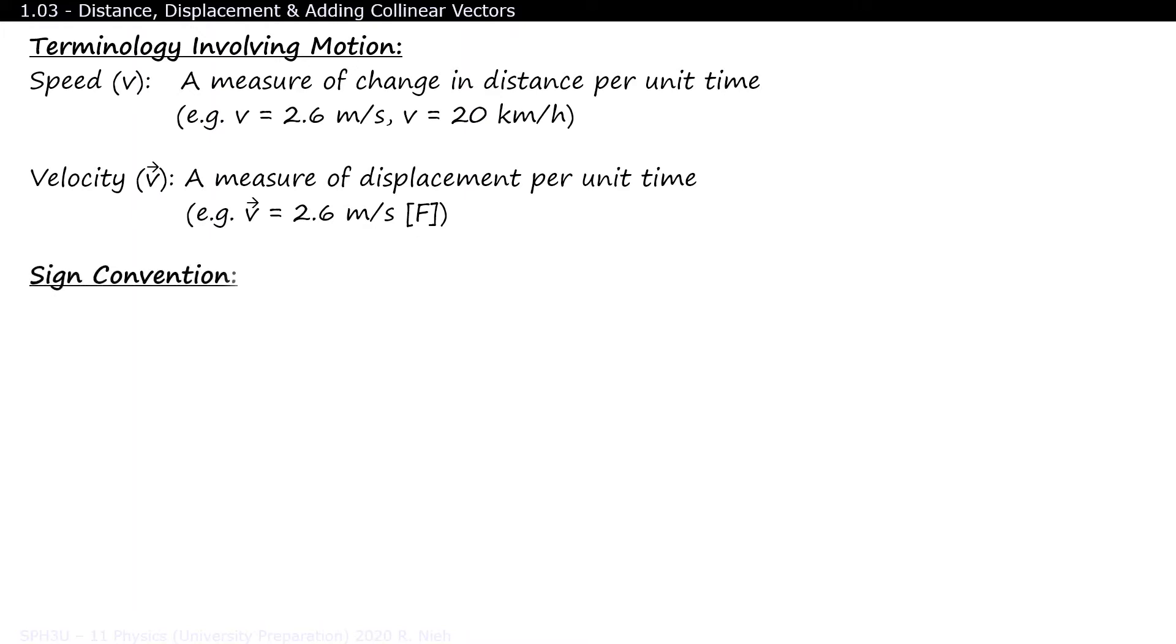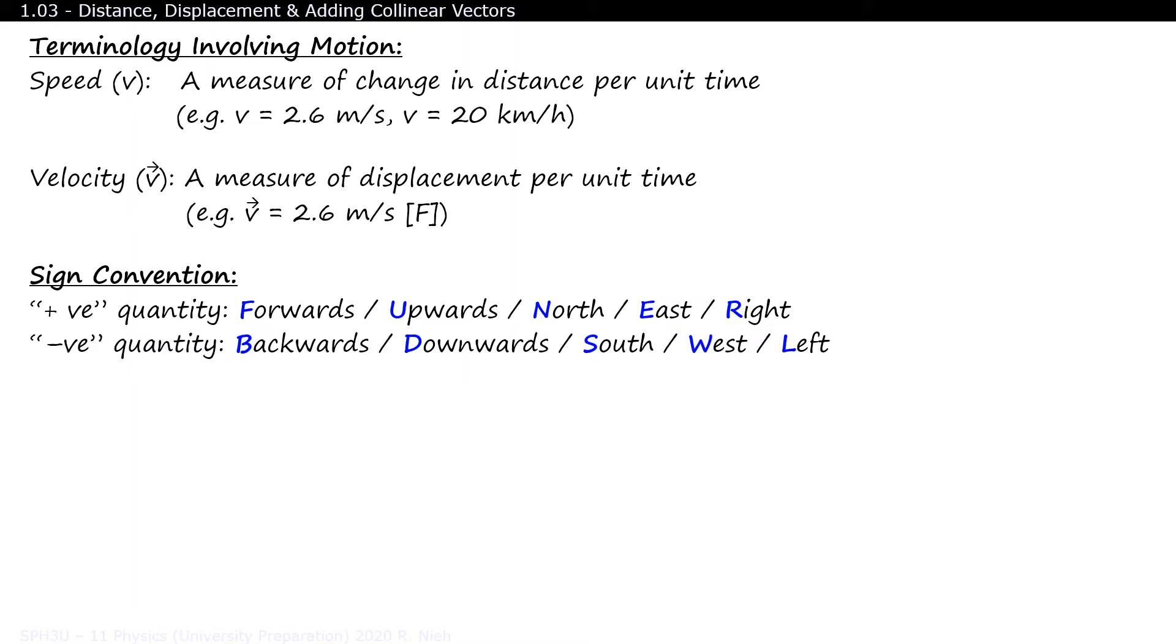In general, there are certain directions that are sometimes defined as positive directions. Like forwards, upwards, northwards, eastwards, and to the right. And the opposite direction would be written as the negative values. You don't have to follow this rule. But it's a common convention to follow.